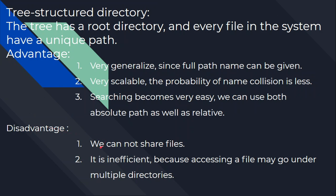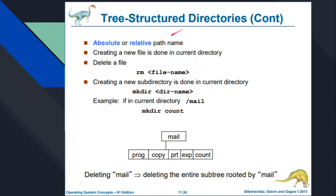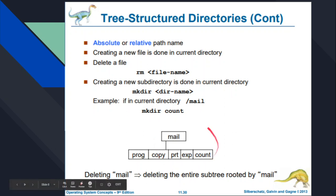The disadvantage of this tree structure is that we cannot share files, because as per the mathematical definition of a tree, it cannot have a cycle — there is no loop, meaning sharing of files is not possible. It is also inefficient because accessing a file may go through multiple directories, consuming more memory access time. In terms of commands: deleting a file uses RM (remove file name), and making a directory uses MKDIR with the directory name. For example, slash mail is a directory — from there creating a file called count will add it under mail. Deleting mail will delete the entire subtree rooted by mail.